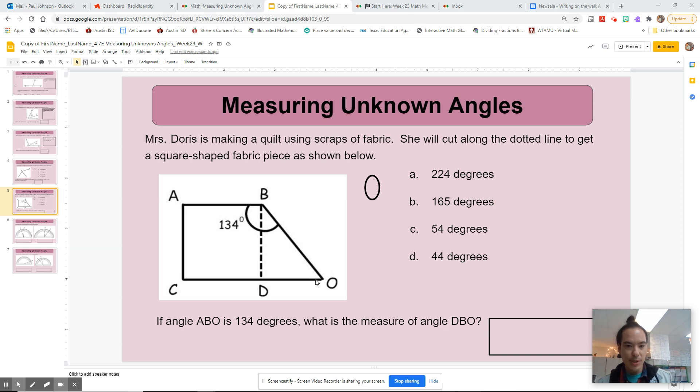So ABO, looking at that big obtuse angle, it's 134 degrees altogether. The way they have labeled 134 degrees might be a little bit confusing because it's inside the square. Remember, that's the whole angle, the whole thing.